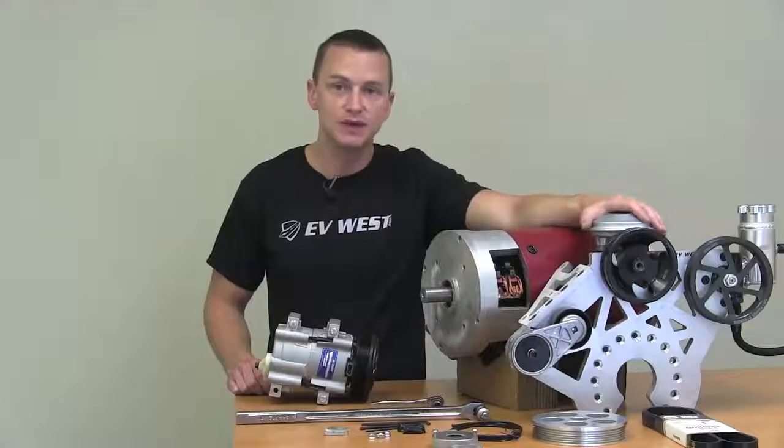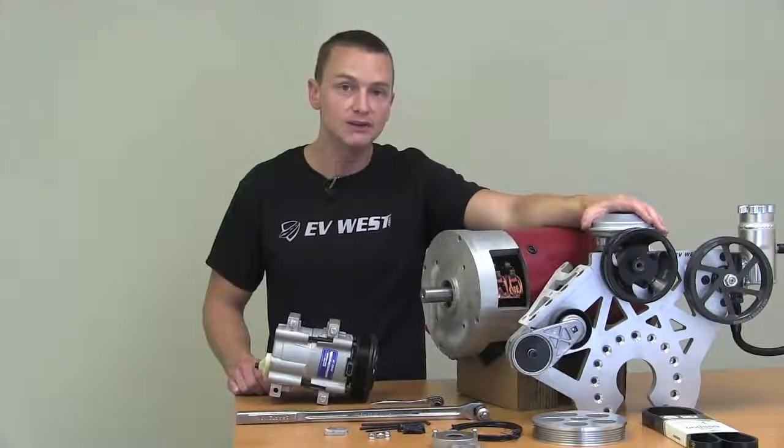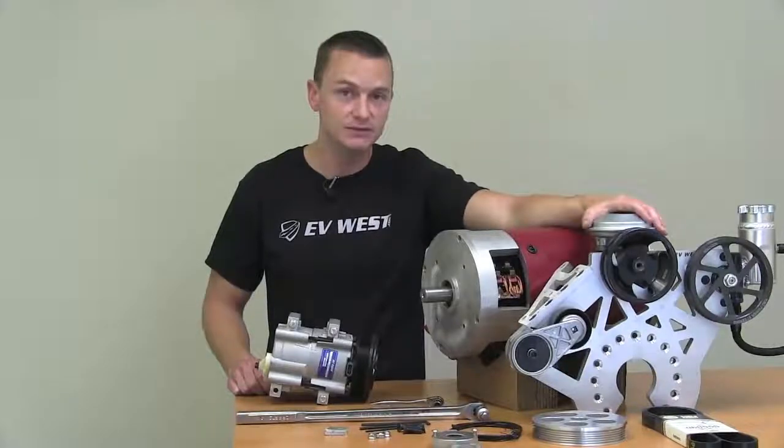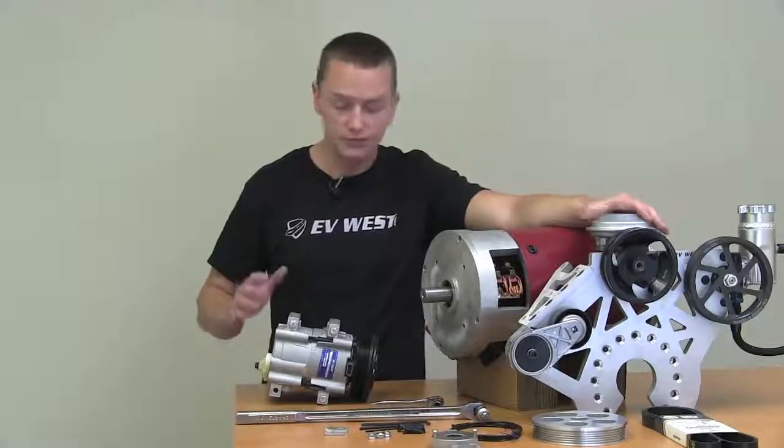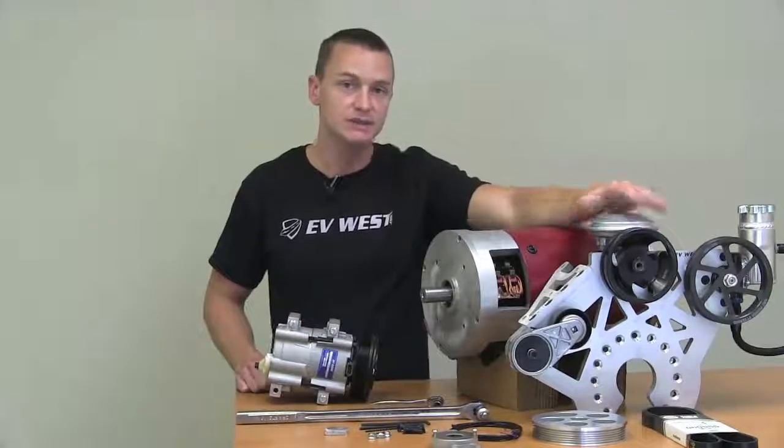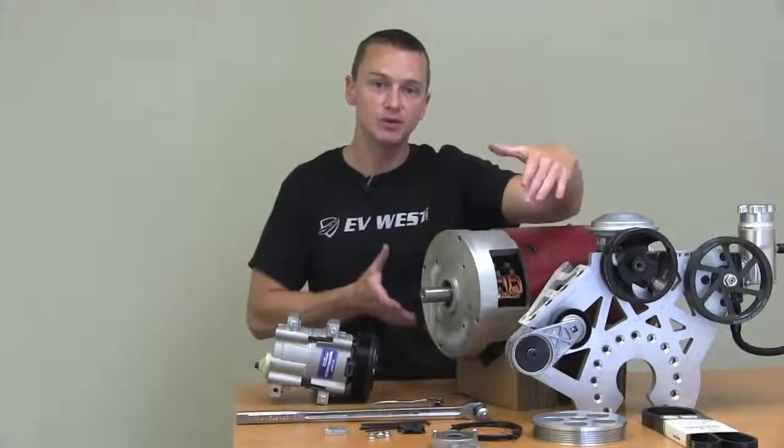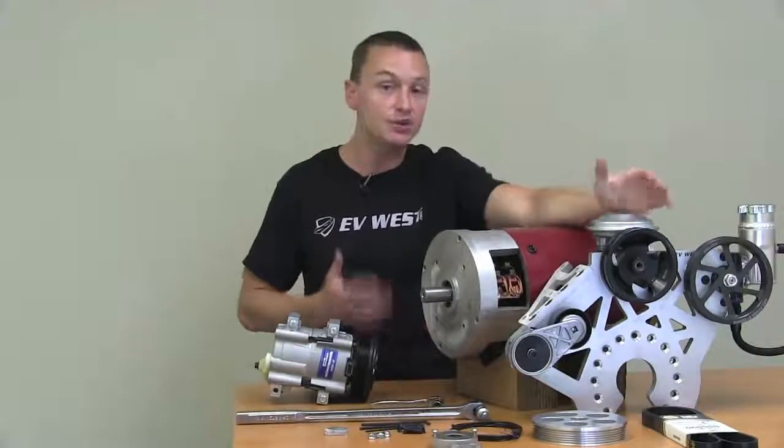So what we've done is put together a great kit that mounts on the front of any Warp 9 or Warp 11 motor. Very cost effective solution and it will give you belt driven air conditioning, power brakes, and power steering, all from a very modular small kit that just bolts right onto the front of this motor. Very universal kit.